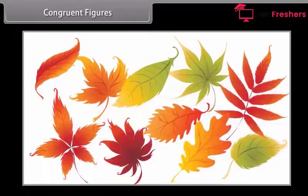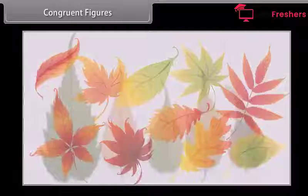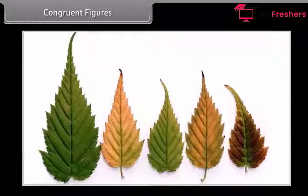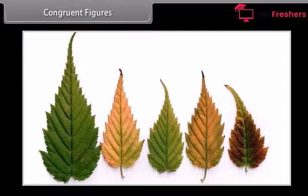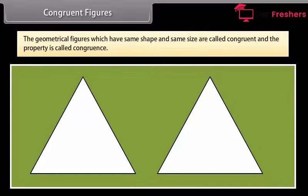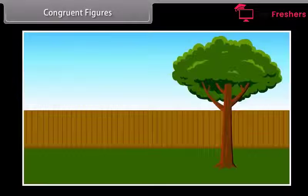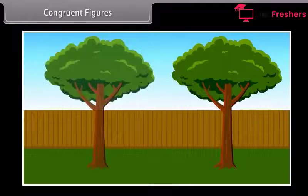You might have observed that leaves of different trees have different shapes, but leaves of the same tree have almost the same shape, although they may differ in size. Geometrical figures which have the same shape and same size are called congruent, and the property is called congruence. Congruent objects are duplicates of one another.